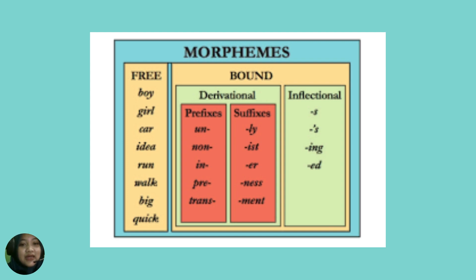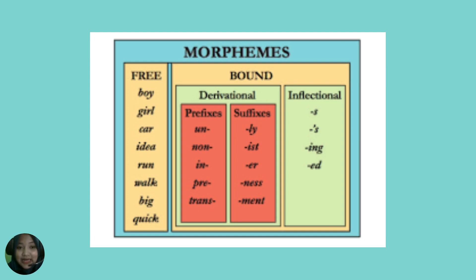Bisa juga ditambahkan dengan Inflectional. Inflectional ini adalah penambahan Morpheme seperti -s, -ing, -er — tanpa mengubah makna aslinya. Kalau misalkan Derivational, dia bakal mengubah maknanya. Kalau Inflectional, dia tidak akan merubah makna aslinya.